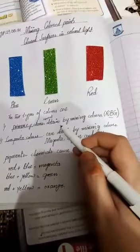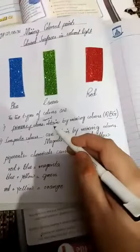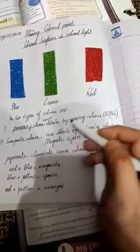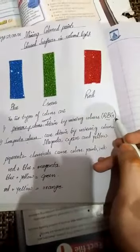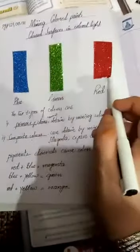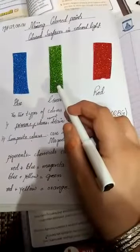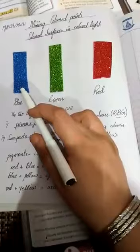Primary colors, dear students, are those colors that cannot be obtained by mixing two or more colors. They are shortly known as RBG. R stands for red, G stands for green and B stands for blue.